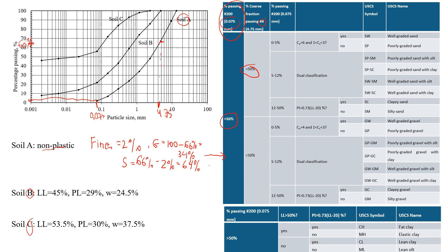Now we go to the third column, which is again about the amount of fines but subdivided into three categories. Since we have 2% fines, we go with the bottom box, where we see that we need values of Cc and Cu — the coefficient of curvature and the coefficient of uniformity.